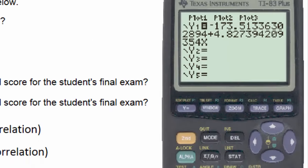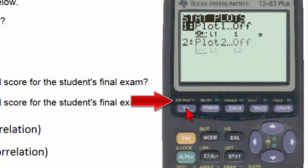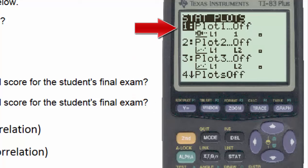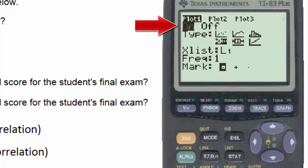To see a graphical representation of this problem, we go to the second stat plot menu, select plot 1, turn it on, and then use the down arrow to go to type and select the first type of graph, which is the scatter plot diagram.